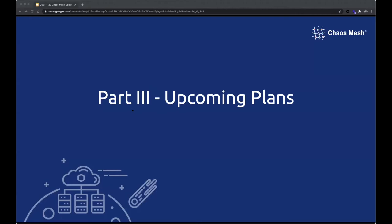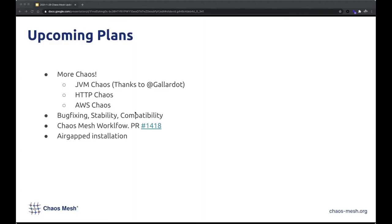The last part is upcoming plans. First, more Chaos types. Thanks to our contributor Galagot, he built GVM Chaos — it's almost complete. After that, Chaos Mesh will be able to inject Chaos into Java applications, simulating things like OOM, slow functions, and custom exceptions.